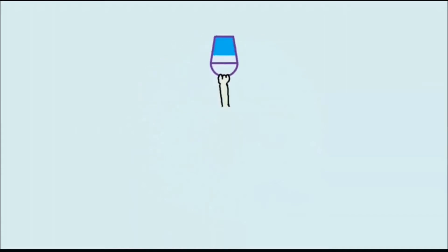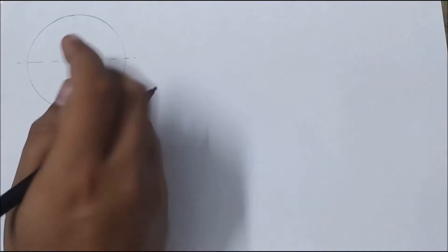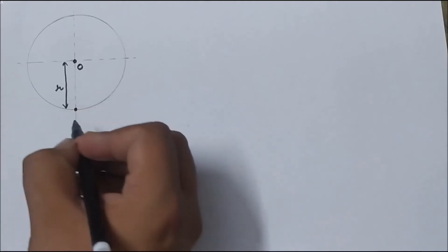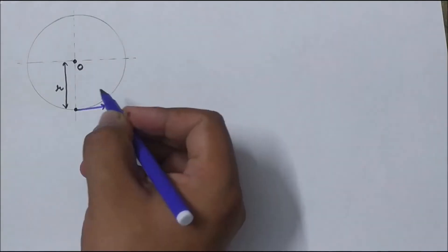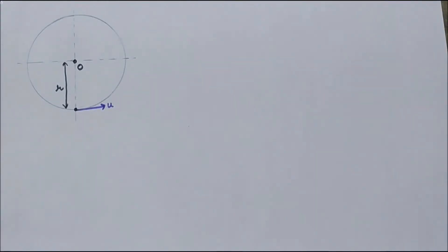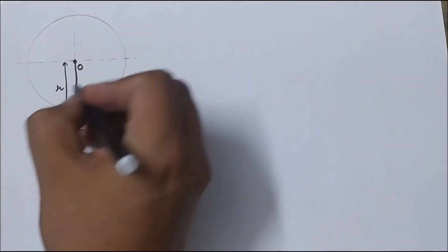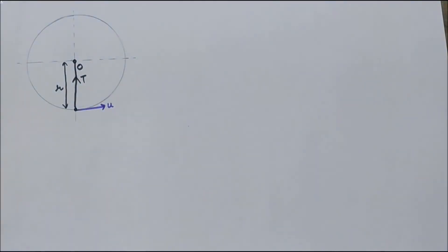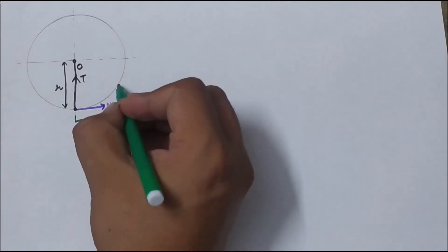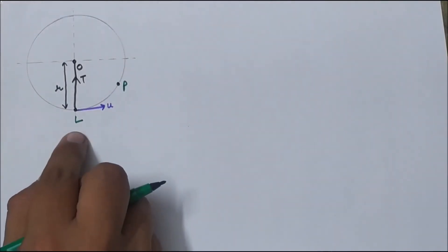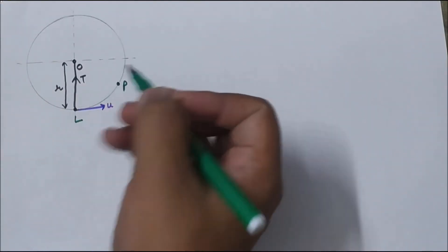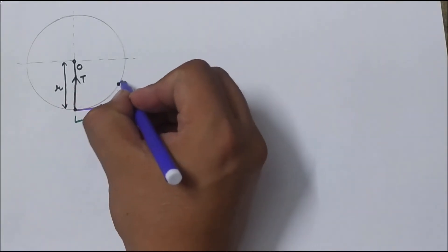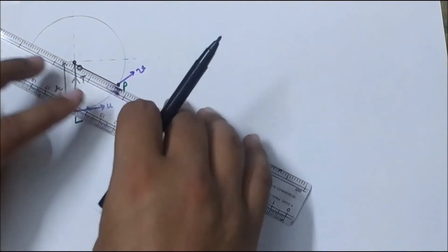Suppose a particle of mass m is constrained with a rope to point O with rope of length small r. Say it has been released with velocity u such that it executes vertical circular motion. This particle is tied with a string, indicated with a black line. Tension T is acting in the string towards the center. After time t this particle from location L reaches point P. L is the lowest location of the particle in this path, and at this moment the particle has velocity v, having covered angular displacement theta.